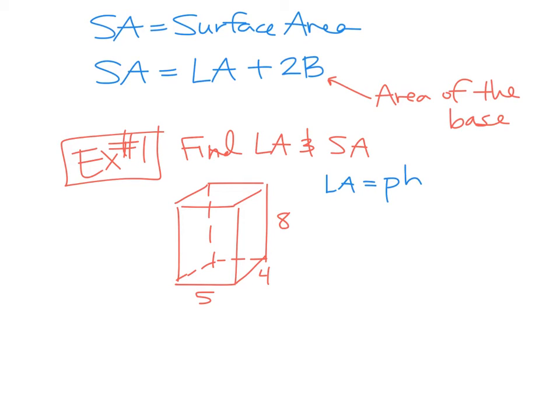So the lateral area of a prism is pH. So that's the formula we're going to use. So we have to figure out what is P right now. P stands for the perimeter of the base. What would you say our base is here? It's not 5 times 4, but that is the shape of our base, is the 5 by 4. So this is our base. How do you find the perimeter of a rectangle?